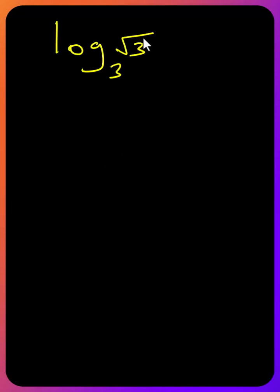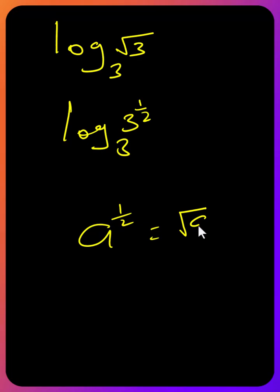So from here we can remove the radical. We can say log of 3 raised to half, because raised to half is the same as square root of a.